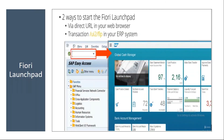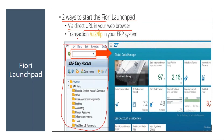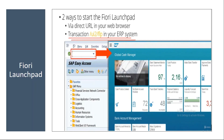Now, how to log on to Fiori. There are two ways to start the Fiori launchpad: one is via a direct URL in your web browser, and the other is from your traditional GUI using a transaction code entered in the command field. We'll look at the GUI method first, then the web browser method.